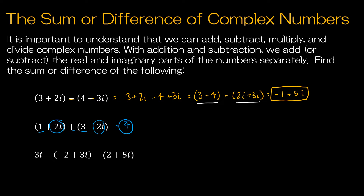Let's look at the last question. The real part comes first, so I'm going to ignore the 3i at first. To avoid messing up my negatives, I'm going to change the subtraction to addition and flip the signs accordingly. Now adding the real parts: I have positive 2 and negative 2, giving 0 for the real part. Then I have plus 3i and minus 3i and minus 5i, so my answer is negative 5i. I could write that as 0 minus 5i, but it doesn't make sense to write the 0.